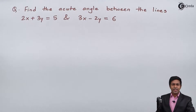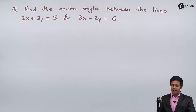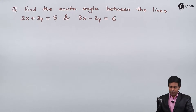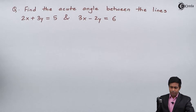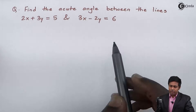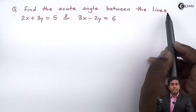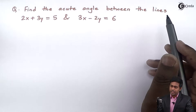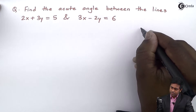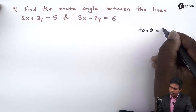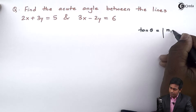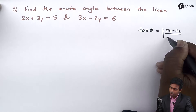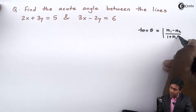Hello everyone. In this problem we have to find out the acute angle between the lines 2x plus 3y equal to 5 and 3x minus 2y equal to 6. To find the acute angle between the lines we have the formula: tan theta equal to mod of m1 minus m2 upon 1 plus m1 into m2.